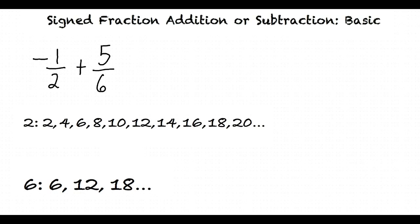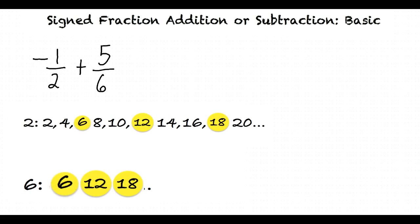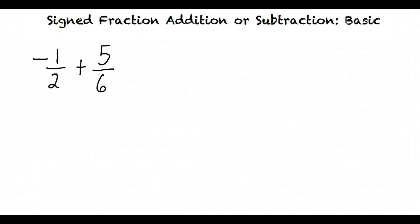The numbers 6, 12, and 18 are all common multiples of 6 and 2. But since 6 is the smallest one, it is the least common multiple. We are going to change the denominators of each fraction to 6. However, we can't just change the denominators and leave the numerators the same, or else the value of the fractions will change. So we must also change the numerator in the same ratio.